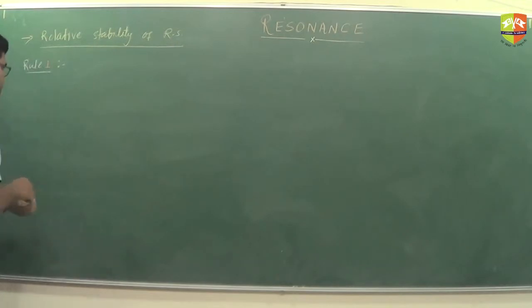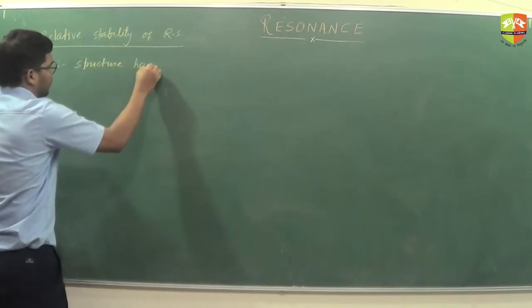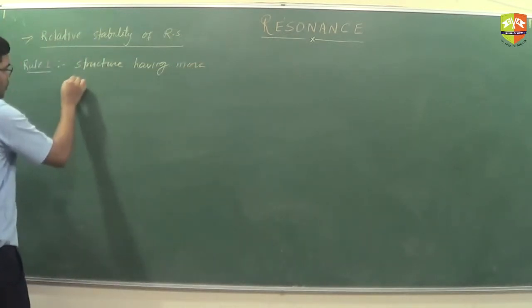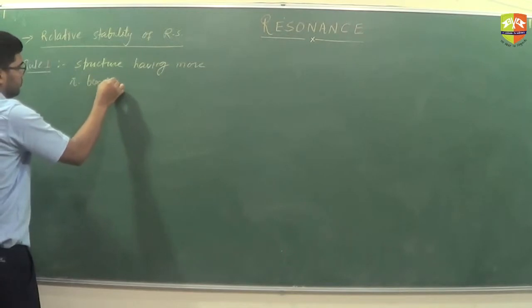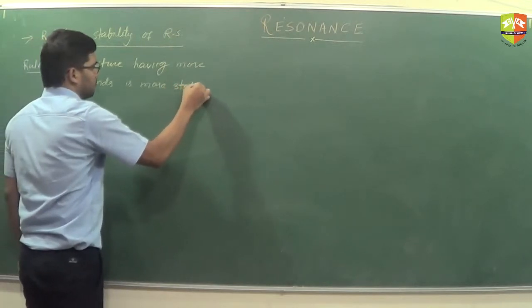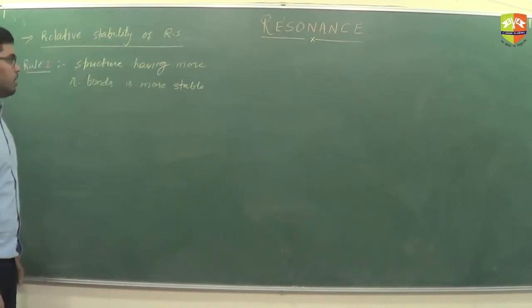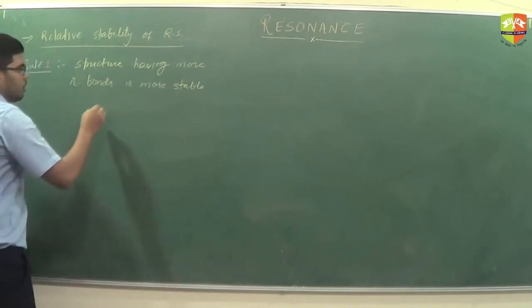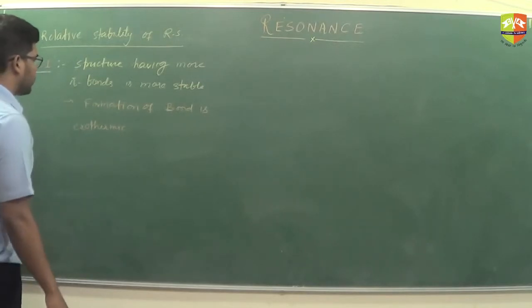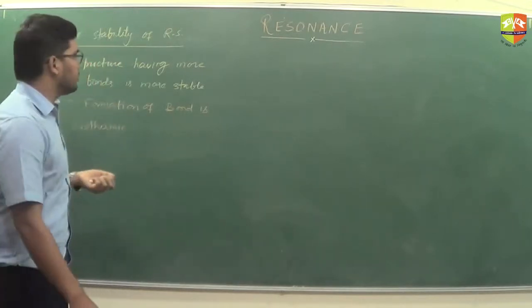Rule one is: the structure having more pi bonds is more stable. We will calculate the number of pi bonds — the structure which has more number of pi bonds is more stable. Why? Because the formation of a bond is always an exothermic process. More number of bonds means more energy released and more stability.